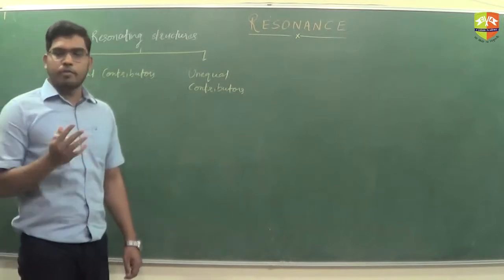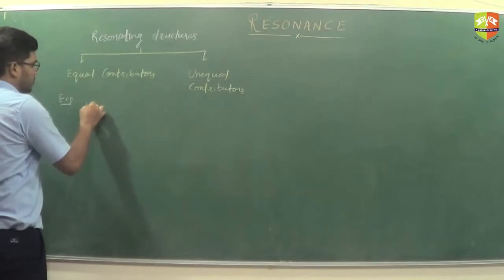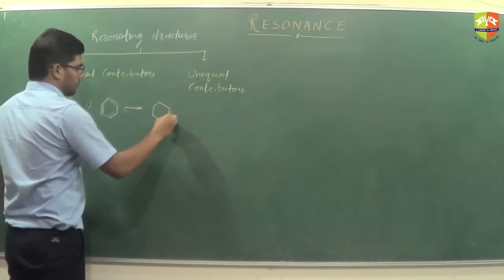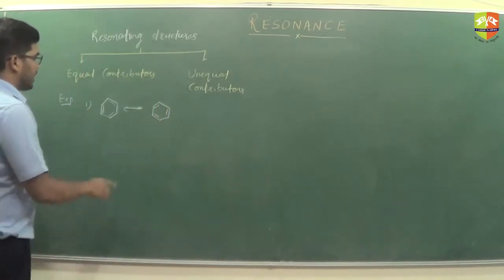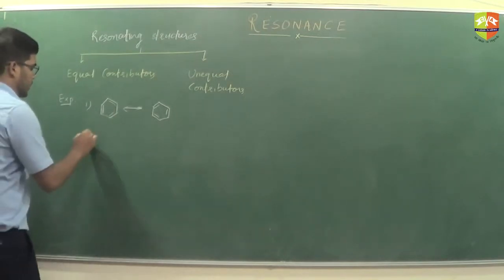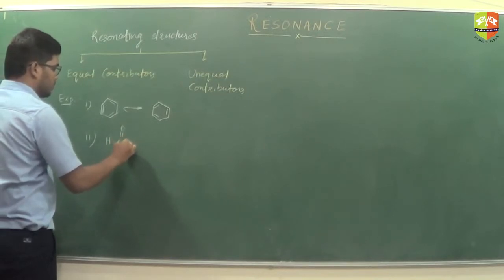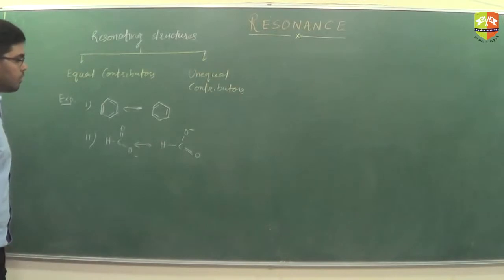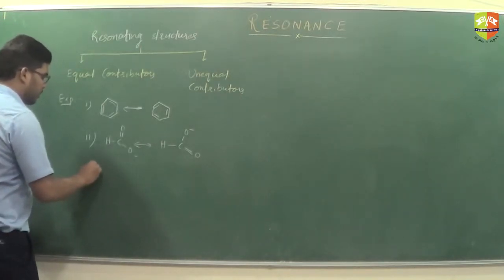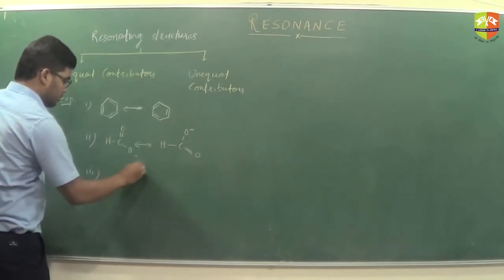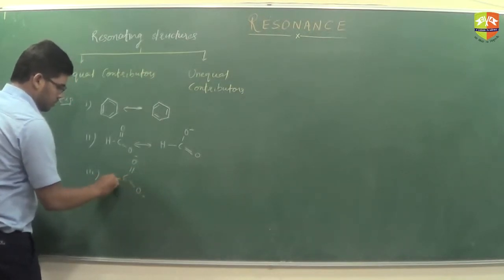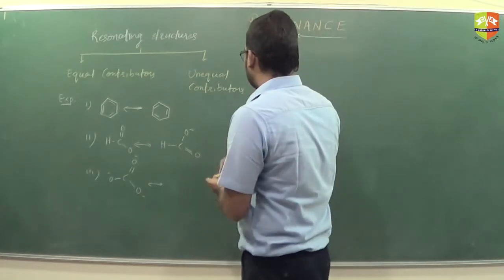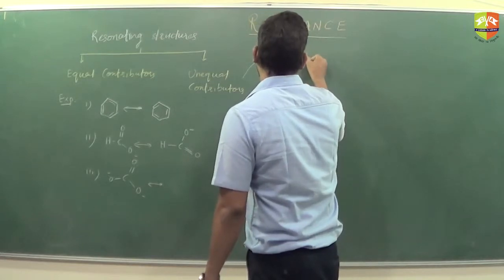Equal contributors are where the resonating structures are equivalent — exactly the same type of resonating structures. For example, the first very common one is the benzene ring. Another example is the carbonate ion, which also gives equal contributing structures if you draw the resonating structures of it.